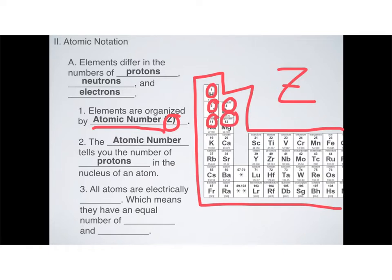Now what does that atomic number tell you? Hydrogen has an atomic number of 1, lithium has an atomic number of 3. Well, the atomic number tells you the number of protons. And that means that by just looking at the periodic table, you can find how many positively charged things there are in the nucleus of each atom.